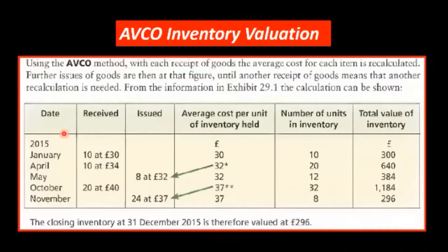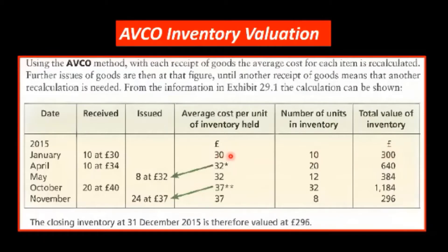So we have a slightly different table. We still have the receipt and the issued columns here, but we have a column now for average cost. And we have a column now for number of inventory. When we multiply the average cost by the number in inventory, we get the inventory value — and dividing the value of the inventory by number of inventory gives you the average cost. You must remember the formula: total cost divided by the number of items you have in.